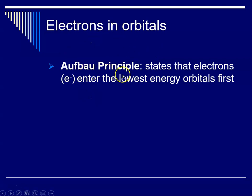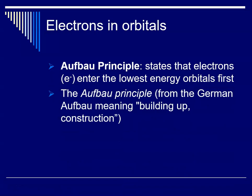The first rule is the Aufbau principle, which states that electrons enter the lowest energy orbitals first. The Aufbau principle comes from the German word meaning 'to build up' or 'construction.' We're able to measure these things and we know electrons always fill in from lowest energy to highest.